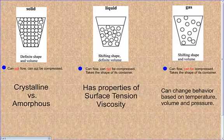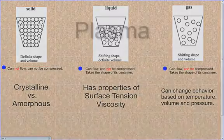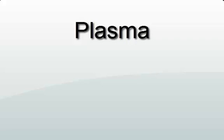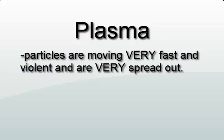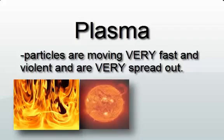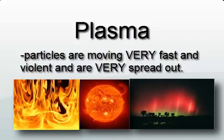There is one other state of matter after gas, and that's called plasma. In the plasma state, the particles are shaking very violently and are very spread out — it's kind of like gas, but the particles are spaced even further apart. Examples of plasma would be fire, the sun, and the Aurora Borealis — the northern lights. That's the really high state of matter. We're never going to really play around with it in our lab, but I wanted to mention that there is one other state of matter called plasma.